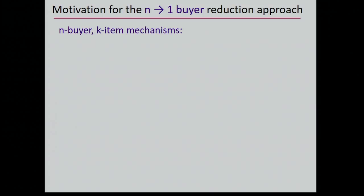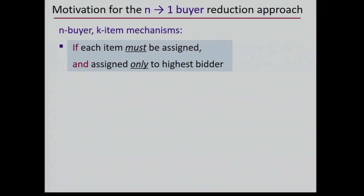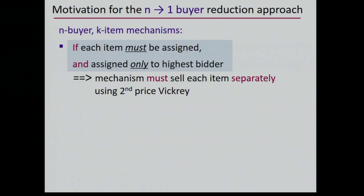For any mechanism, if you put the constraint that every item must be assigned to some buyer and can only be assigned to the highest bidder, then the mechanism must sell each item separately using the second price Vickrey auction. You cannot do anything better.